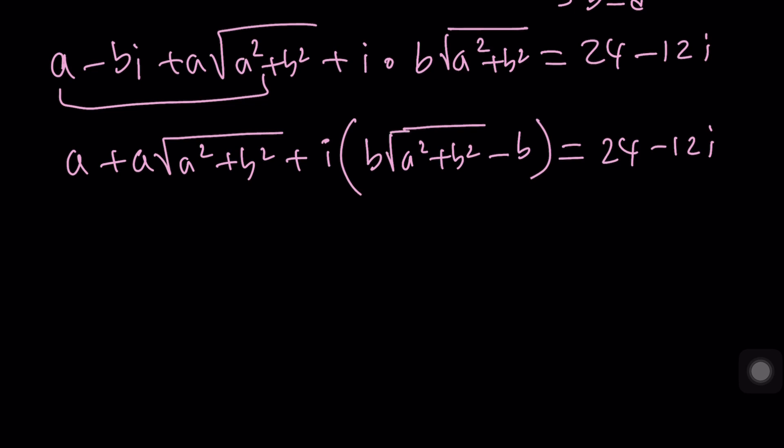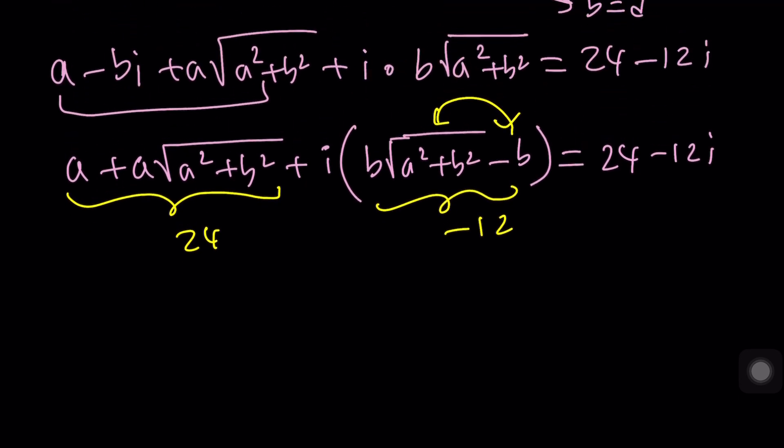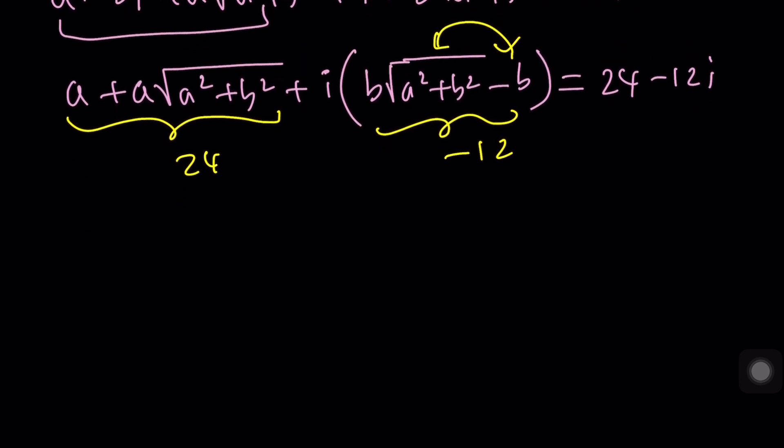So what are we going to do? Real parts are equal. So this equals 24 and this equals negative 12. You can also negate and set it equal to 12, which is something that I usually do. A plus A times the square root of A squared plus B squared is equal to 24. And B minus B times the square root of A squared plus B squared equals 12.